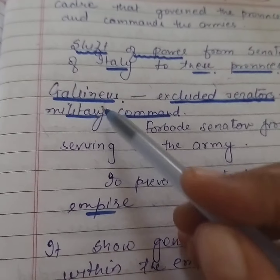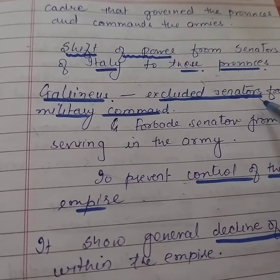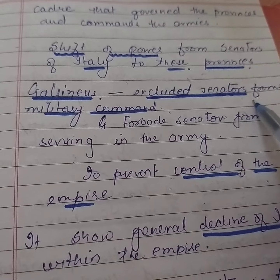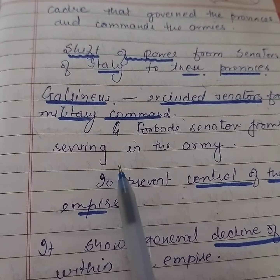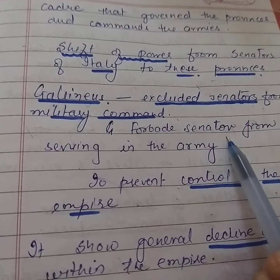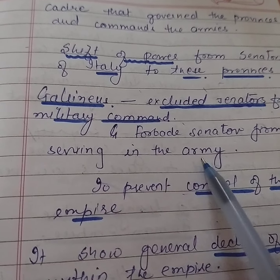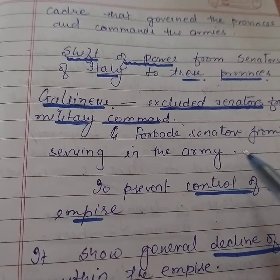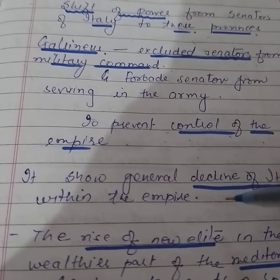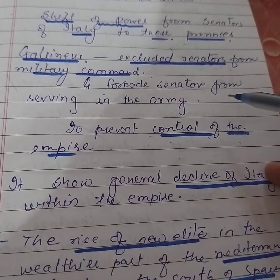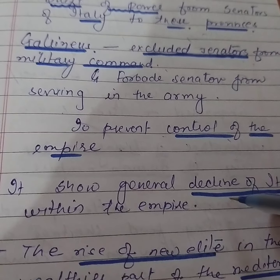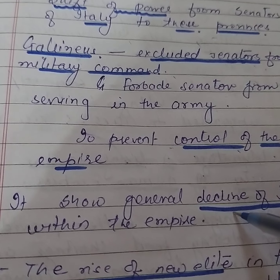The ruler at that time was Gallienus. We are told that Gallienus forbade senators — he prohibited them from serving in the army or having access to it — in order to prevent control of the empire from falling into their hands. The members recruited from these new provinces into the army and administration gained citizenship as it spread to these regions.